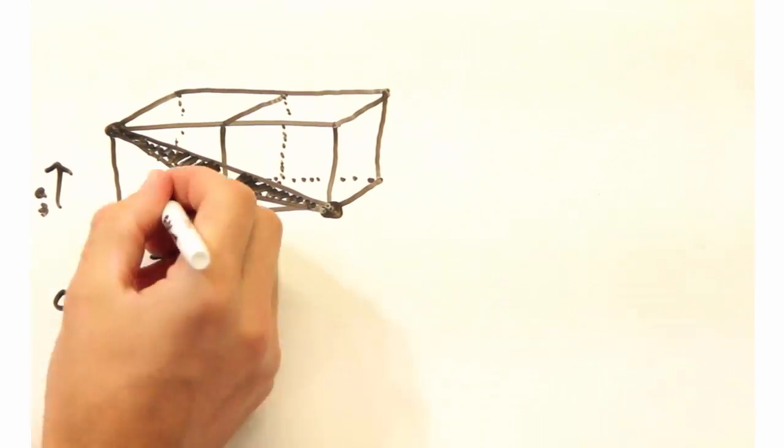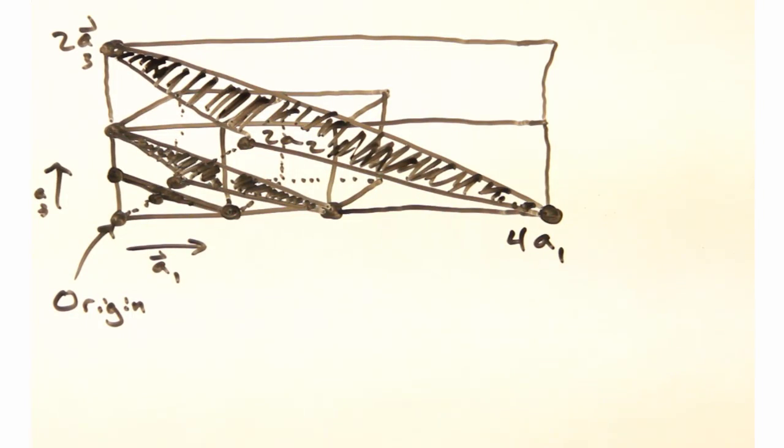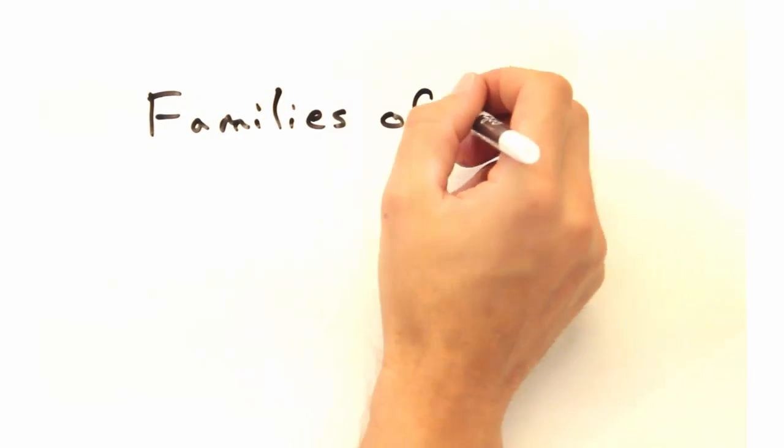Could we then have a 2, 4, 4 plane? Absolutely. That's why when we talk about Miller indices, we usually talk about labeling families of planes rather than unique planes.